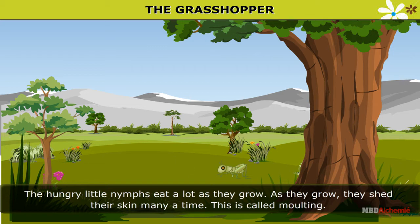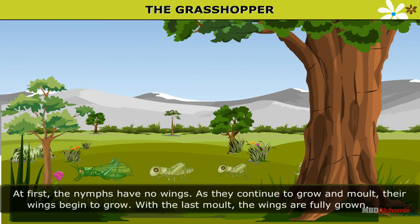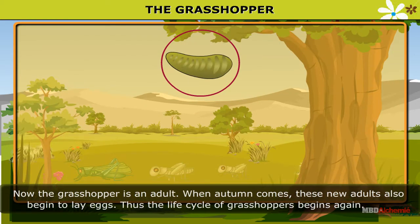The hungry little nymphs eat a lot as they grow. As they grow, they shed their skin many a time. This is called molting. At first, the nymphs have no wings. As they continue to grow and molt, their wings begin to grow. With the last molt, the wings are fully grown. Now, the grasshopper is an adult.